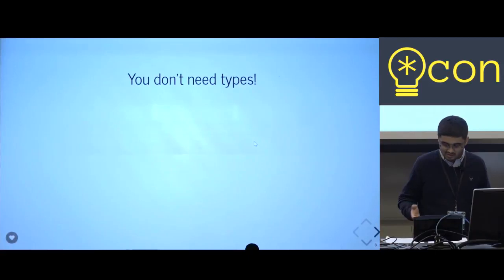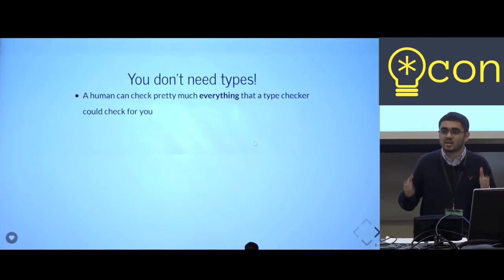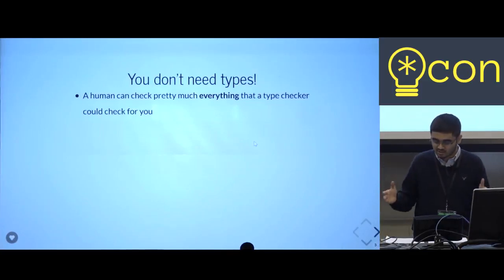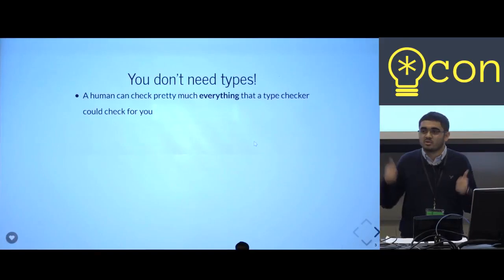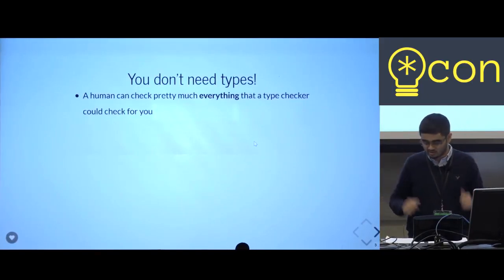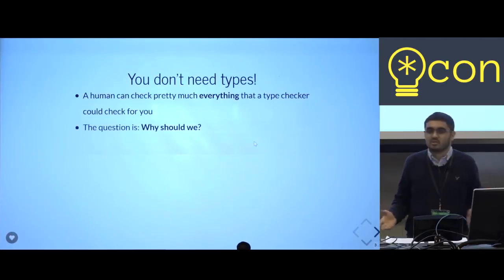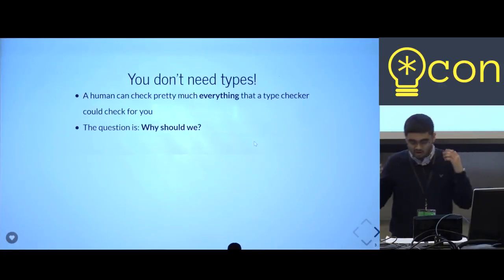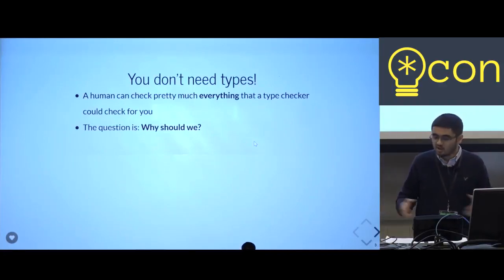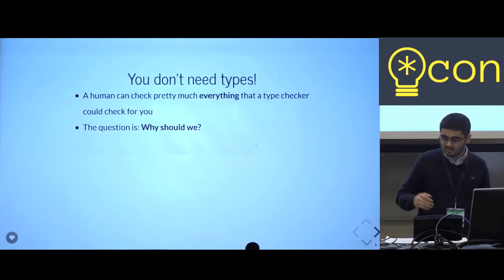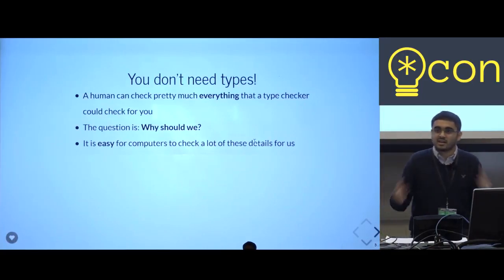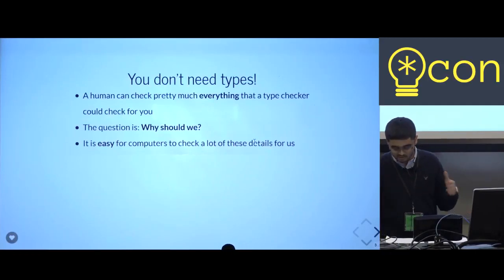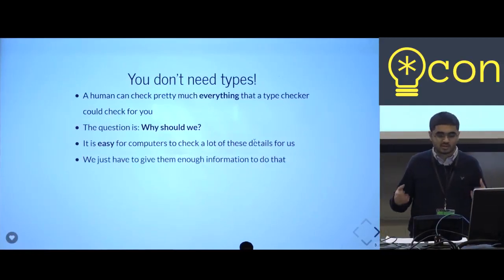You don't actually need to have your program checked using types. You can check pretty much everything that a type checker does on your own — humans can check everything that type checkers check, and I know this from years of experience using Python. When you don't have a type checker, you end up looking through your code and checking it yourself. But why should you have to? Programming can be hard enough without having to make sure that basic things are correct. Humans forget things all the time, but it's easy for computers to check a lot of these things automatically — and they won't forget any details, no matter how many times you run your program. So why should we spend our time doing something that we can automate away? If we give computers enough information, they can check a ton of details about our programs.